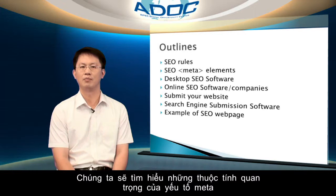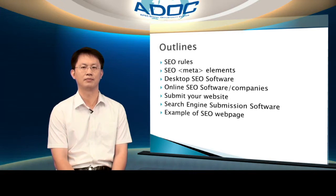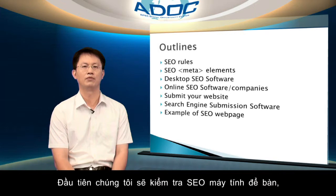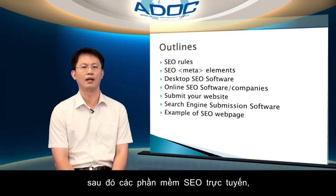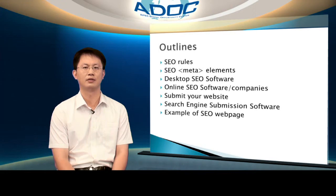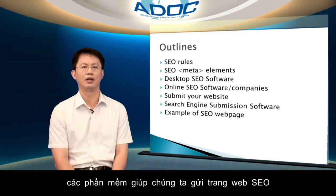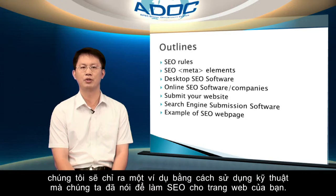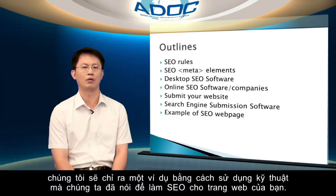We will look at the important attributes of the meta elements. After that, we will look at some software that can help us to do SEO. We will first check out desktop SEO, then online SEO software. Finally, the submission software that helps us submit our SEO web pages. In the end of the section, we will show you an example using the techniques we have talked about to do SEO to our web pages.